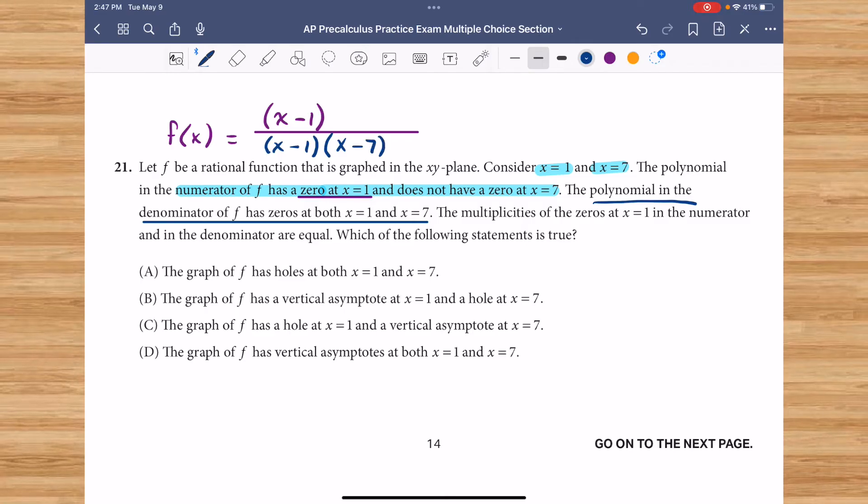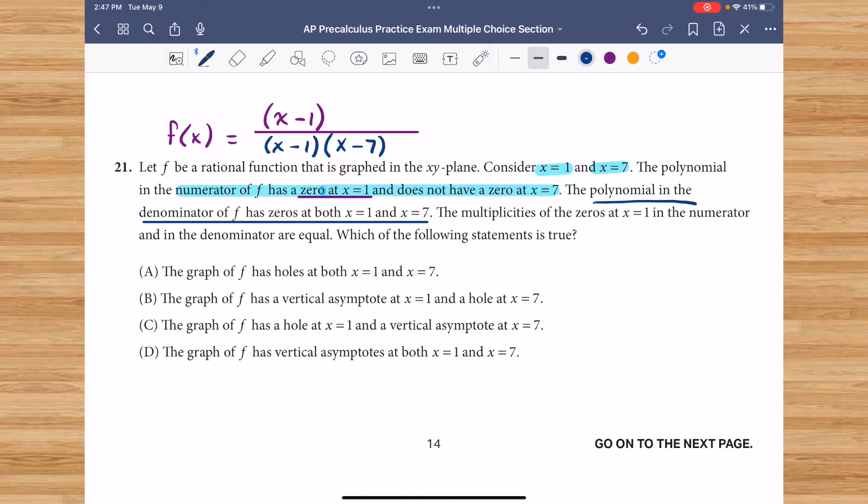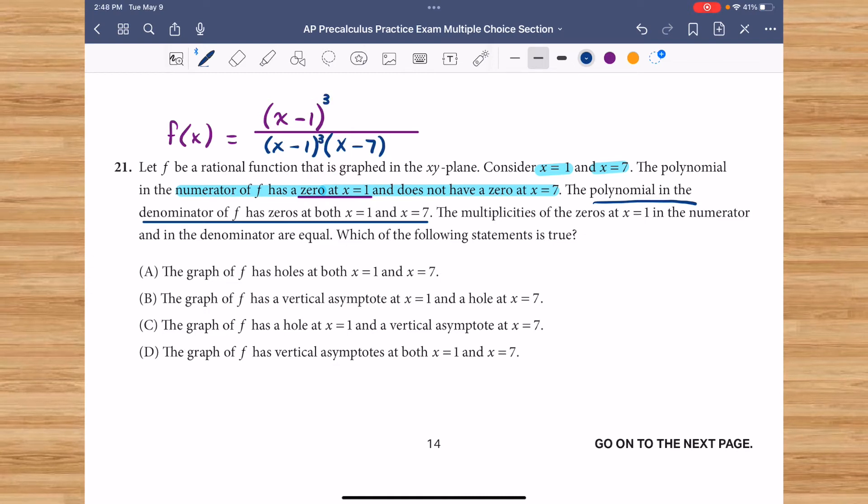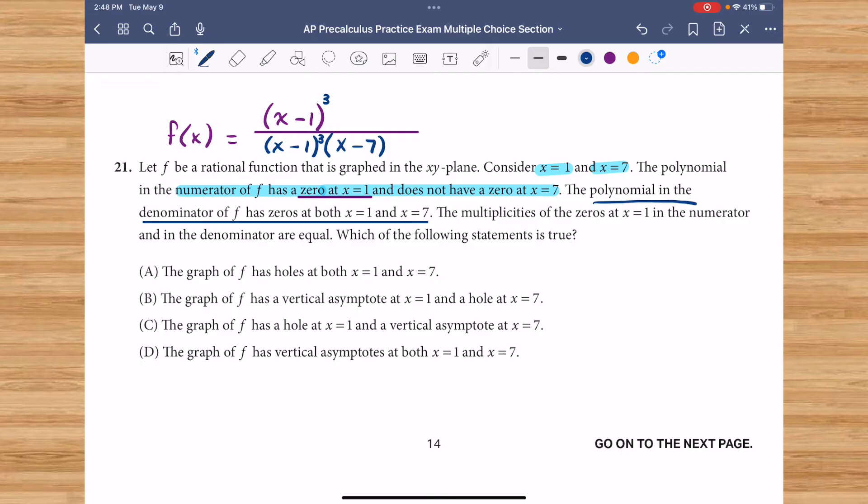The multiplicities of the zeros at 1 in the numerator and the denominator are equal. In other words, if this had a cube on it, this too would also have a cube on it. The multiplicities for that factor are the same. To make our lives easy, we'll leave them at 1.